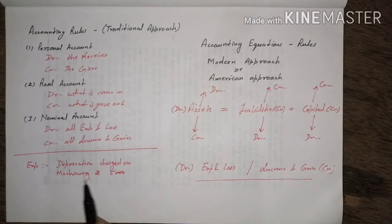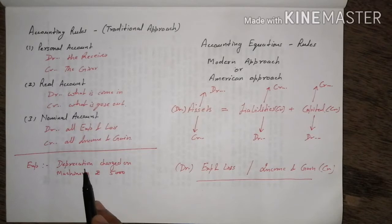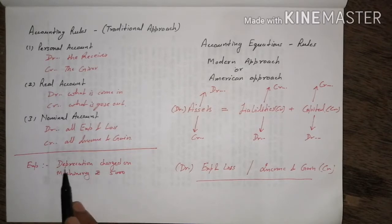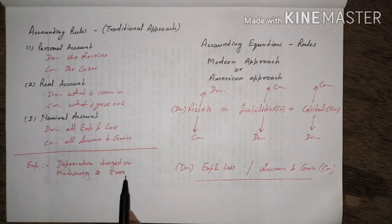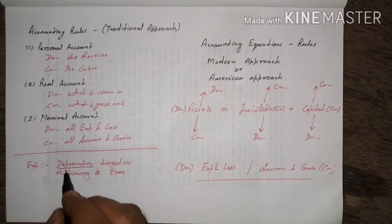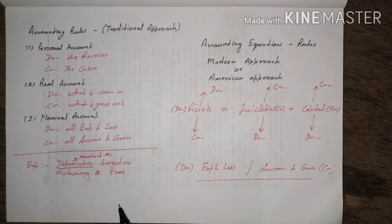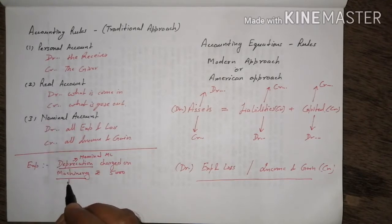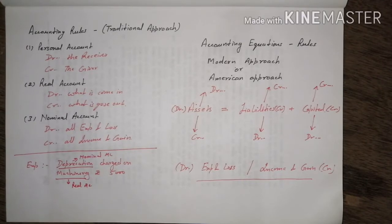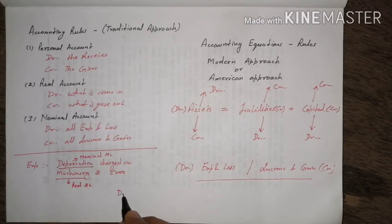Depreciation means the value of assets used in the business gets reduced. If assets' value is reducing due to use, that is a loss for the firm. When passing a journal entry, we find two sides: depreciation as a loss (nominal account) and machinery as a real account.